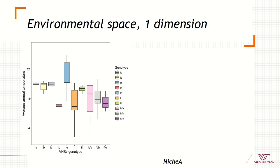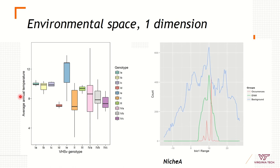When referring to environmental dimensions, we can think in a single environmental dimension — for example, temperature. Here we have temperature, the range of temperature in terms of the occurrence points, the ecological niche model, and the environmental background in the study area, or in a region, in the BAM diagram.